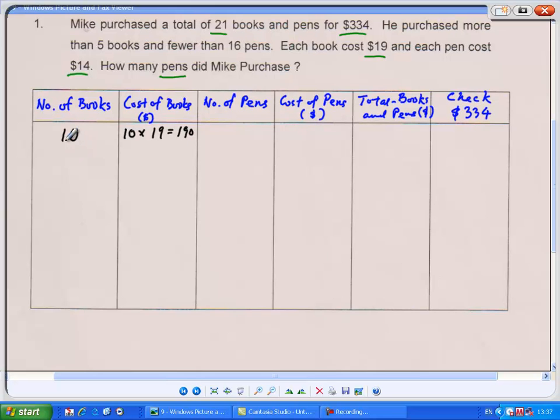If he bought 10 books, how many pens did he buy? 21 minus 10, that would be 11 pens. 11 times 14, that would give us $154. The total cost, $190 plus $154, that would give us $344. Which is the wrong guess because it's too much by $10.